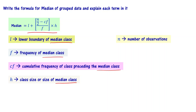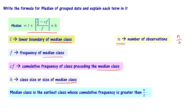What is the median class? The median class is the earliest class whose cumulative frequency is greater than N/2. We first find the cumulative frequency, then identify the value just above N/2, and choose that class as the median class. Once you identify the median class, you know all the required values.